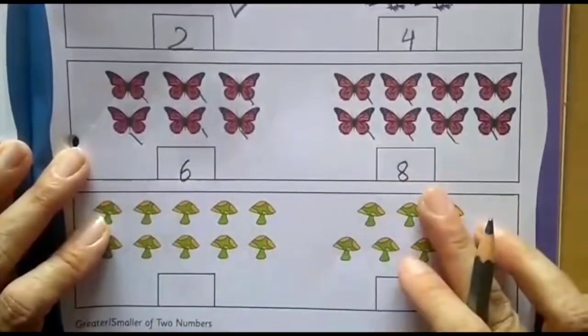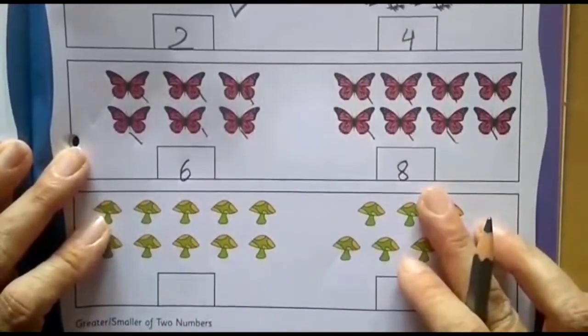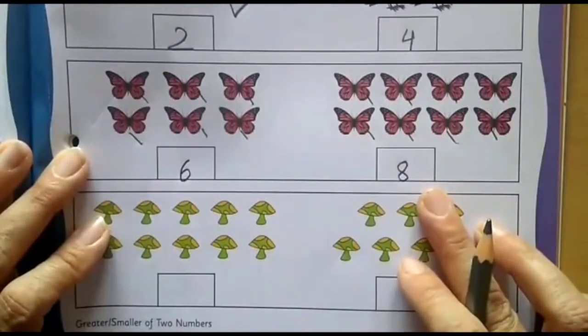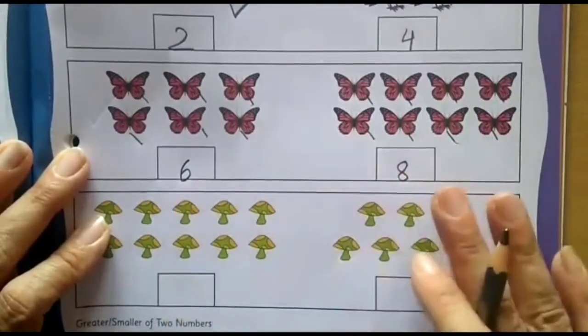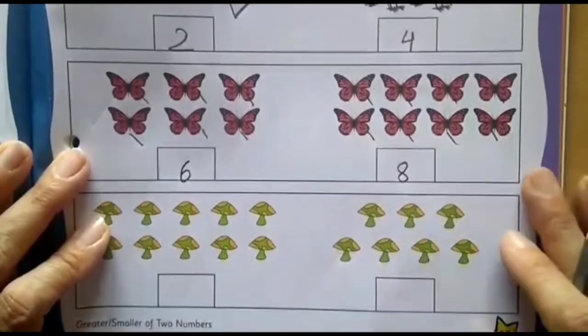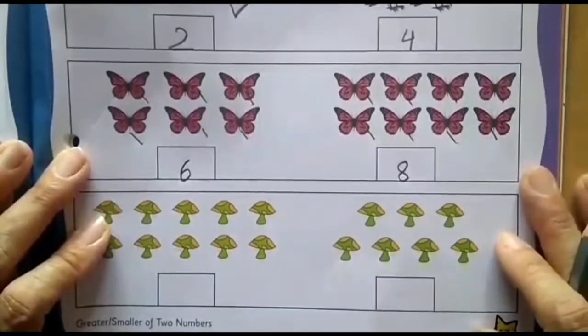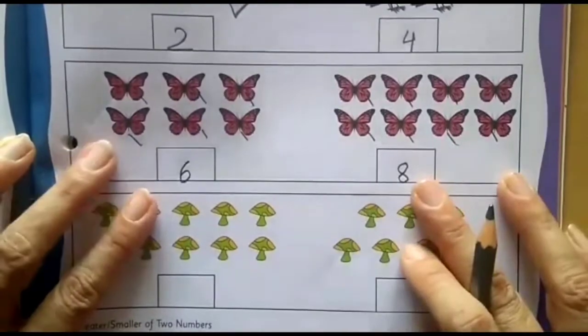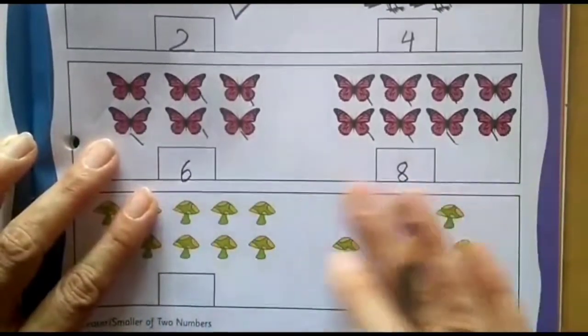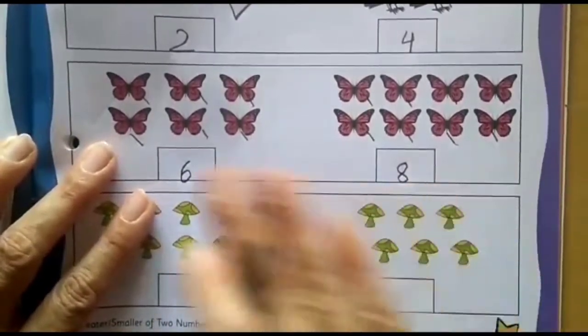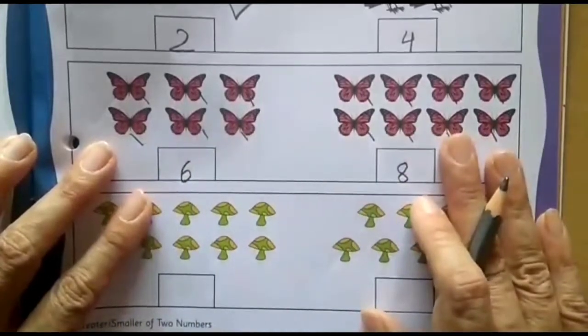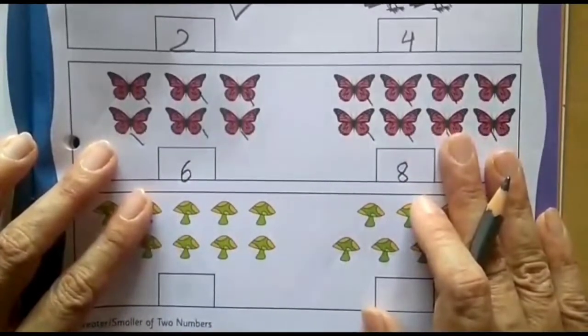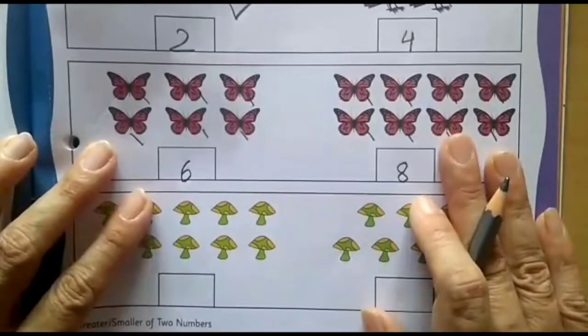So now between 6 and 8, as I have told you earlier, we have to count the number till both the numbers are covered. So we have to start counting. 1, 2, 3, 4, 5, 6, 7 and 8. Now we have covered both the numbers, number 6 as well as number 8. And if you look at the pictures also, you can see and understand that where the smaller number of butterflies are there.